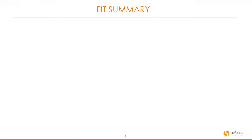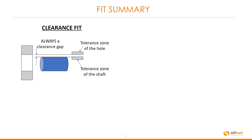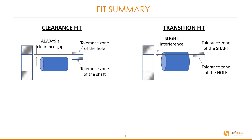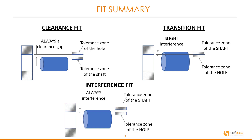So let's summarize what these fits are. For clearance, we always have a gap — the tolerance zone of the hole is way above the tolerance zone of the shaft. In a transition fit we have a slight interference, meaning the tolerance zones of the hole and shaft are very close together. For the interference fit, the tolerance zone of the shaft is above the tolerance zone of the hole, meaning there is always interference.